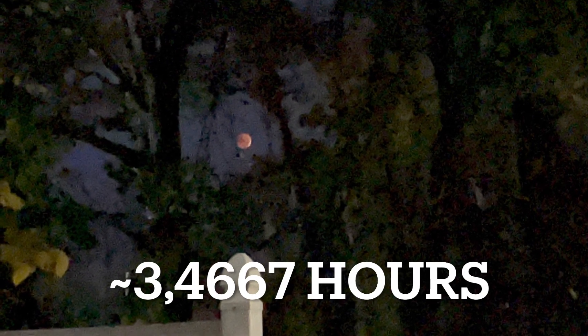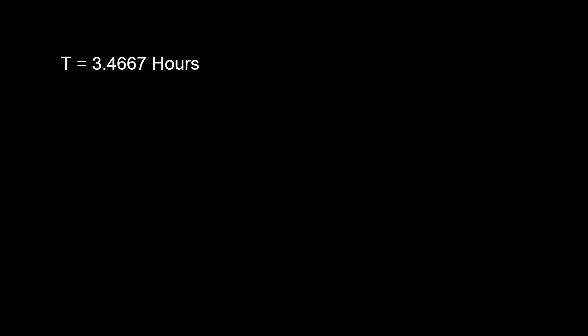So, if we find that time difference and multiply it by 2, that's how long the moon stayed in the umbra. This means that the moon was in Earth's umbra for about 3 hours and 28 minutes. So, we calculated our time, 3.4667 hours.